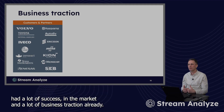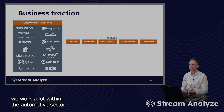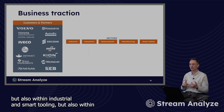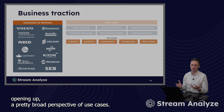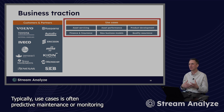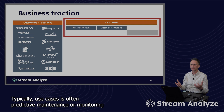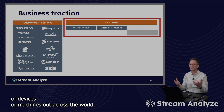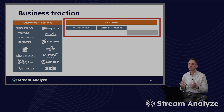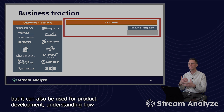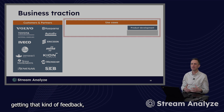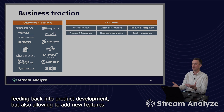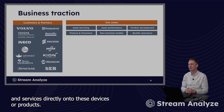We've actually had a lot of success in the market and a lot of business traction already. We work a lot within the automotive sector, but also within industrial and smart tooling, but also within manufacturing and partnering with semiconductor companies today, opening up a pretty broad perspective of use cases. Typical use cases are often predictive maintenance or monitoring of devices or machines out across the world. But it can also be used for product development — understanding how our products or assets are actually behaving in real life, getting that kind of feedback feeding back into product development, but also allowing the addition of new features and services directly onto these devices or products.